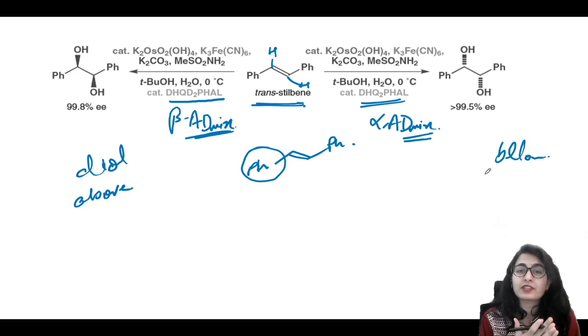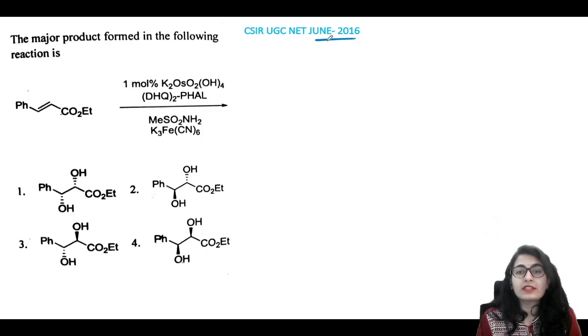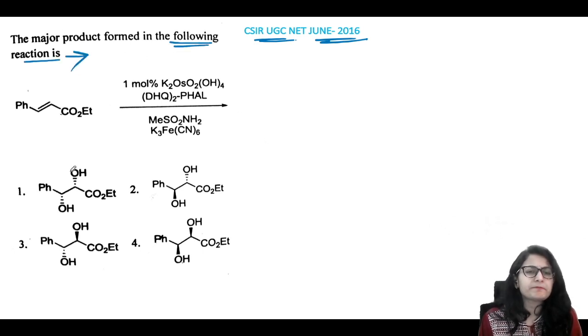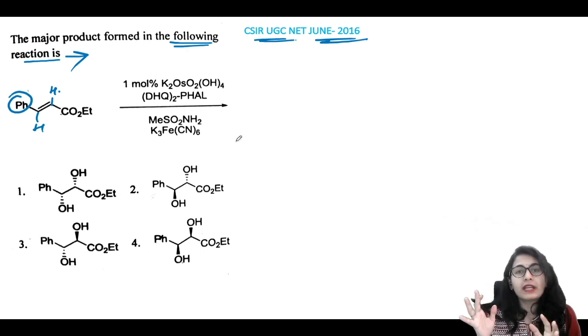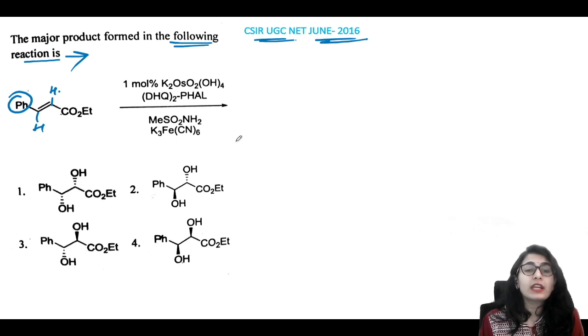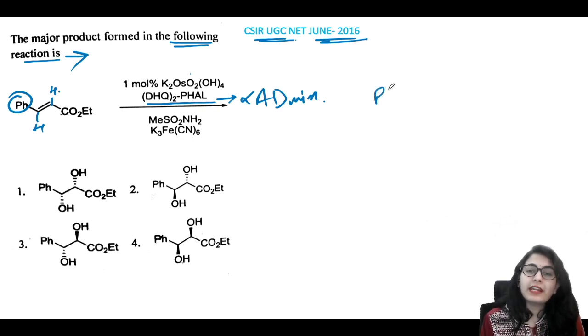There was a question in CSIR NET June 2016: the major product formed in the following reaction is... You see there's a Ph group and an ester group. The carbon-based group gets more priority because there are more carbons. We check the reagent: it's (DHQ)₂-PHAL, the alpha-AD-mix. Don't make the mistake of going directly below the plane. We have to write the molecule so the largest group is on the lower left corner. Then you do the dihydroxylation below the plane.